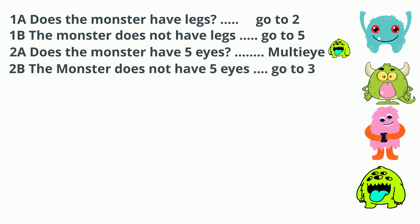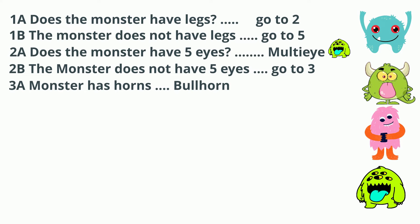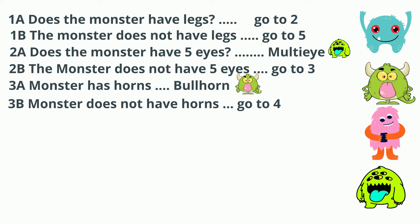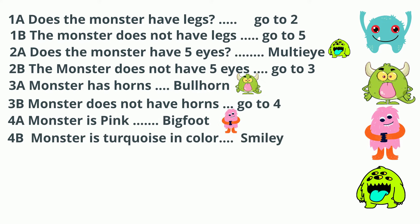Now we can divide them again. 3A: monster has horns and will be Bullhorn. 3B: monster does not have horns, go to 4. At question 4 I will not use a yes/no question but go with characteristics. 4A: monster is pink and it's Bigfoot. 4B: monster is turquoise, so it will be Smiley.